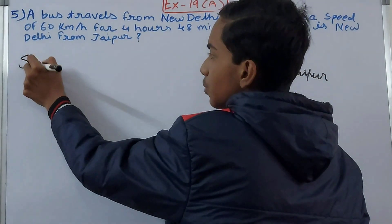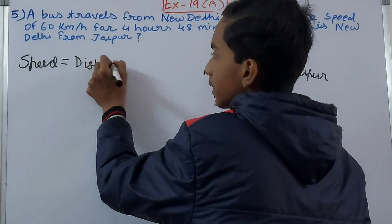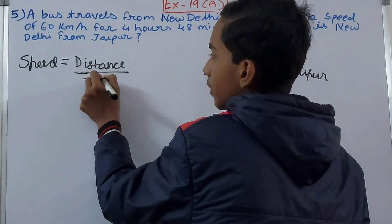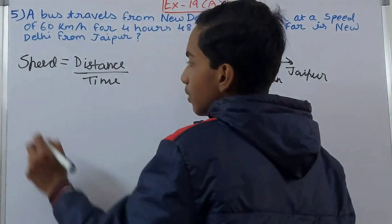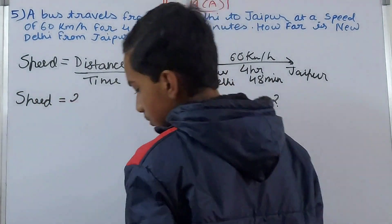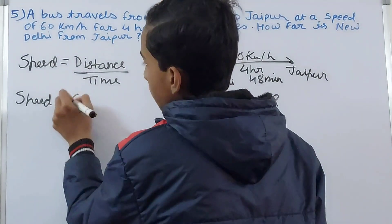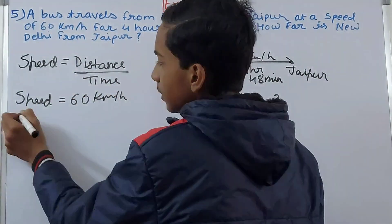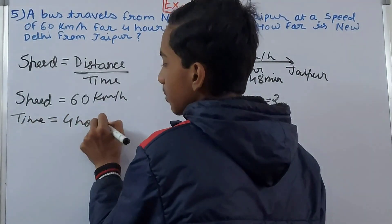We know that speed equals distance upon time. From the problem, we know the speed is 60 kilometers per hour, and the time is 4 hours 48 minutes.